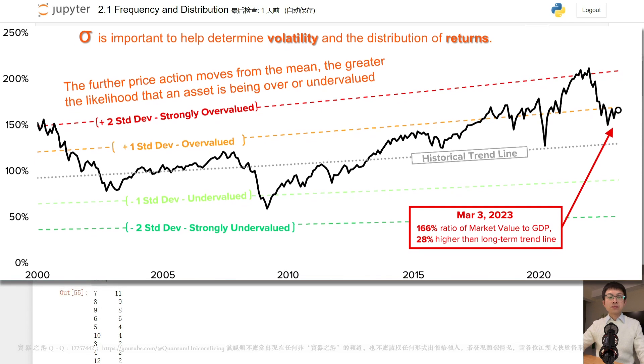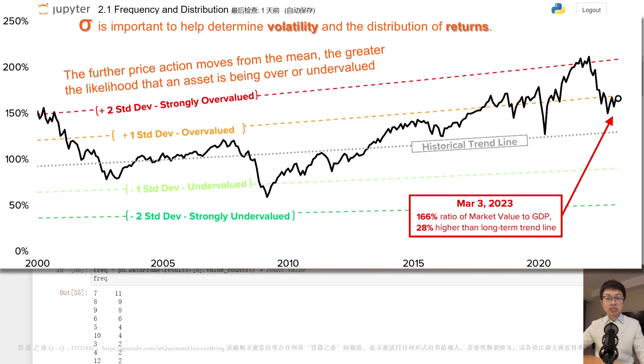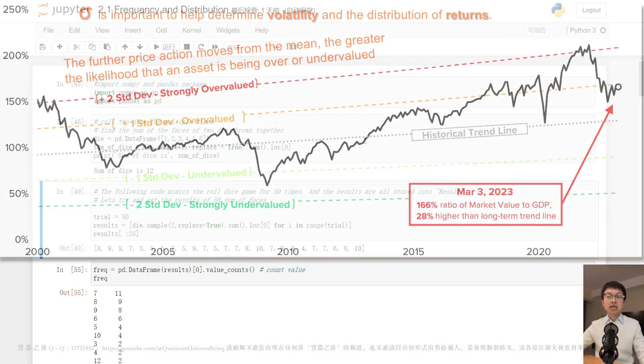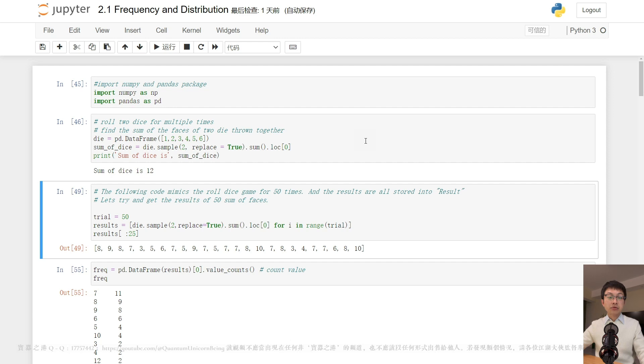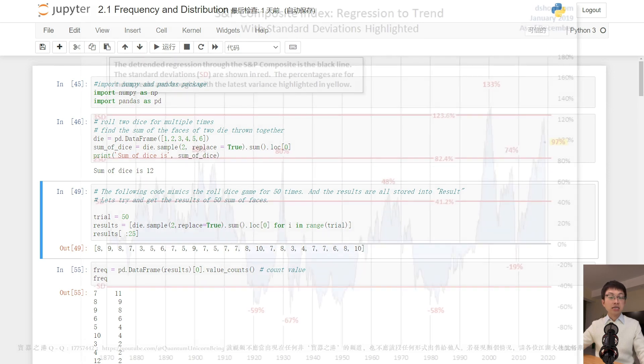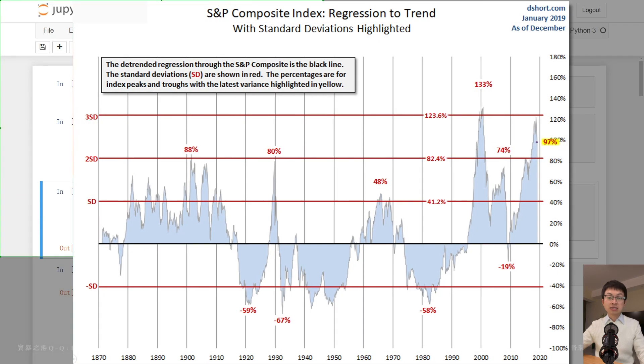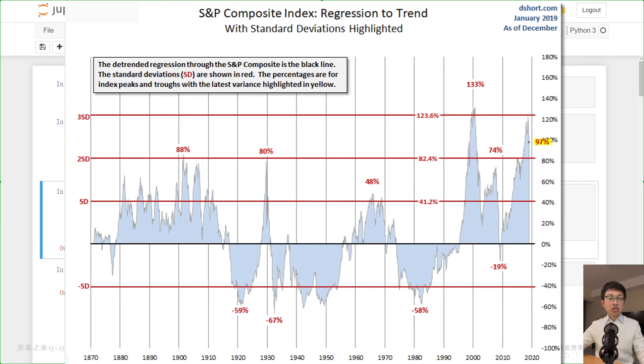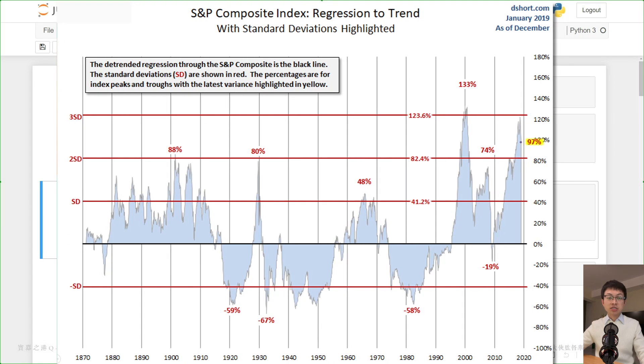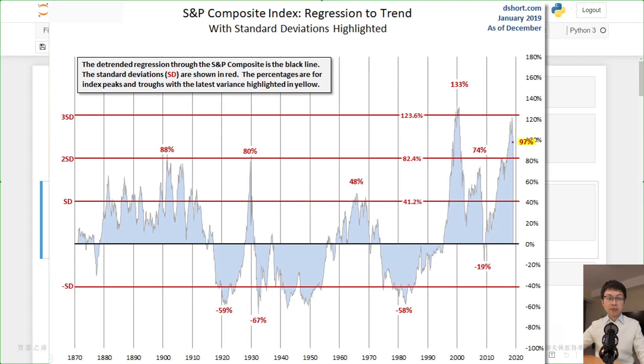The further price action moves from the mean, in this case, the greater the likelihood that an asset is being over or undervalued. Traders can use the standard deviation to suggest potential trades.